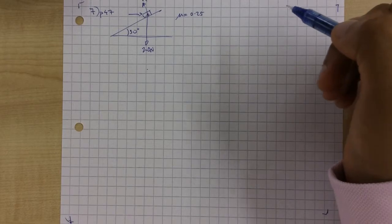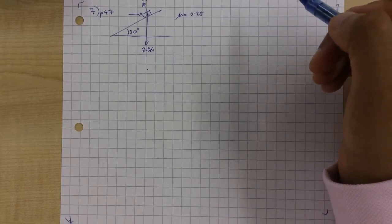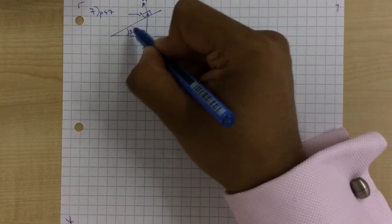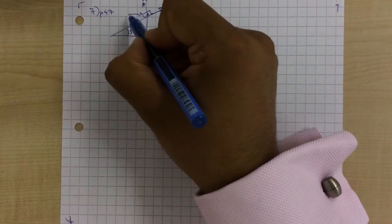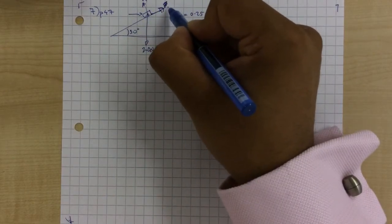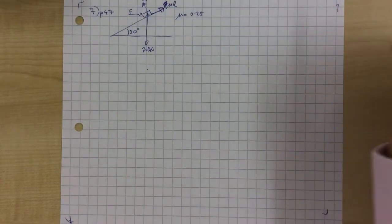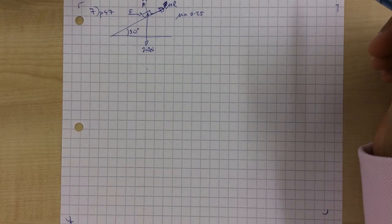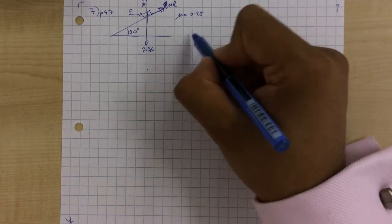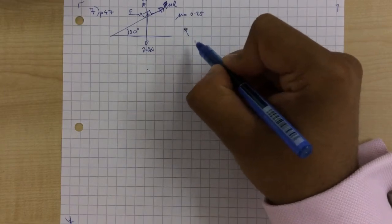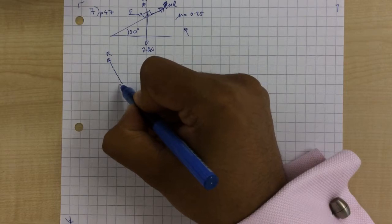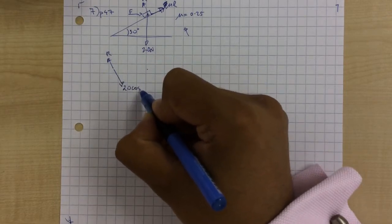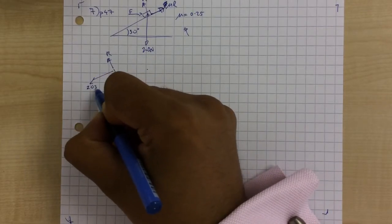This becomes slightly more difficult. Part A says to prevent the block from slipping down the plane. Since the block wants to slip down, friction acts up the plane. Instead of writing F for friction, we'll write mu R, because we want to find the horizontal force F. That looks a bit neater. We're going to resolve, starting with perpendicular to the plane.